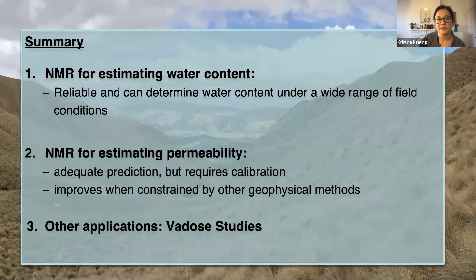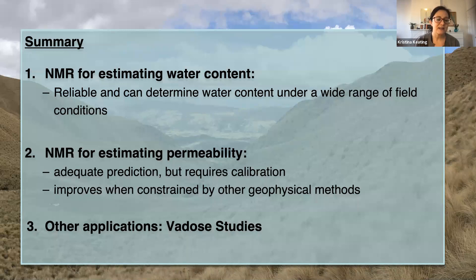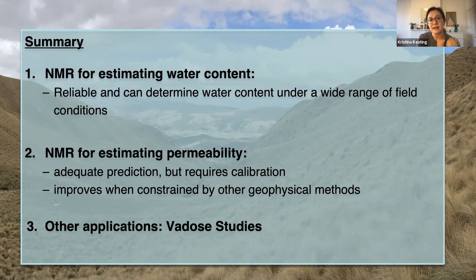To summarize: NMR does a great job of estimating water content — it's reliable and we can determine water content under a range of field conditions. When using NMR for estimating permeability, we get a pretty good prediction, but it requires a lot of calibration and understanding of NMR petrophysics. We can improve that when we constrain it with other geophysical methods. Other applications include trying to link NMR relaxation times to vadose zone parameters such as matrix potential.